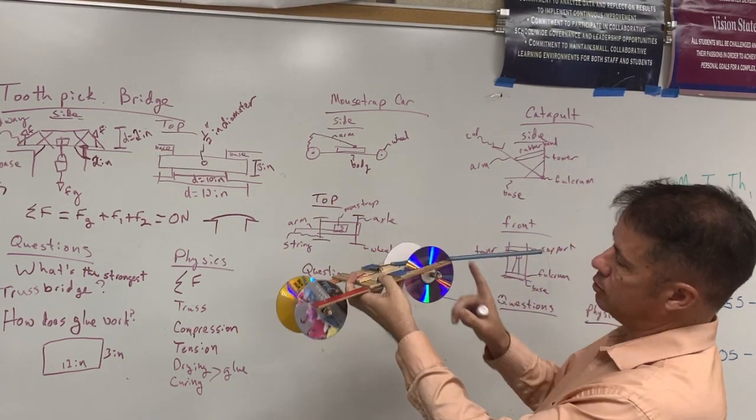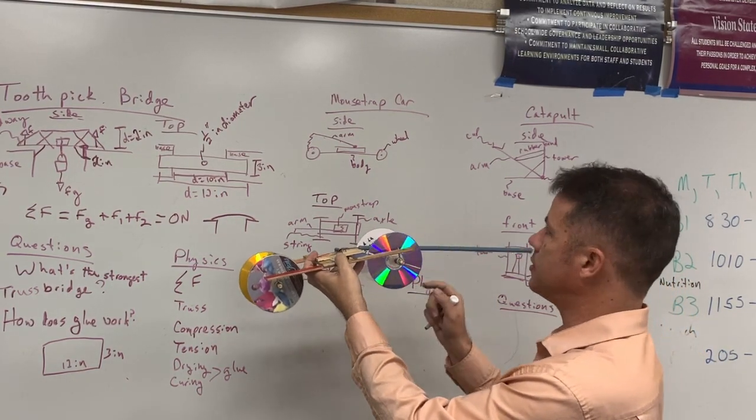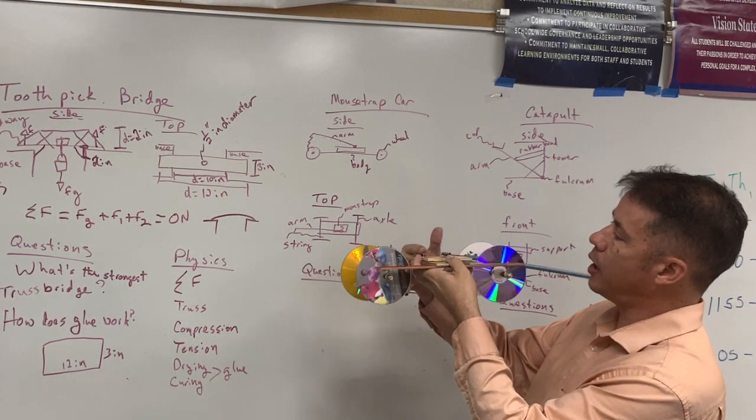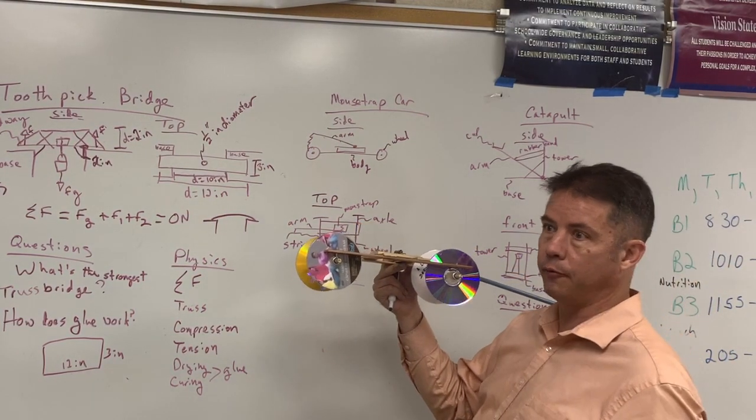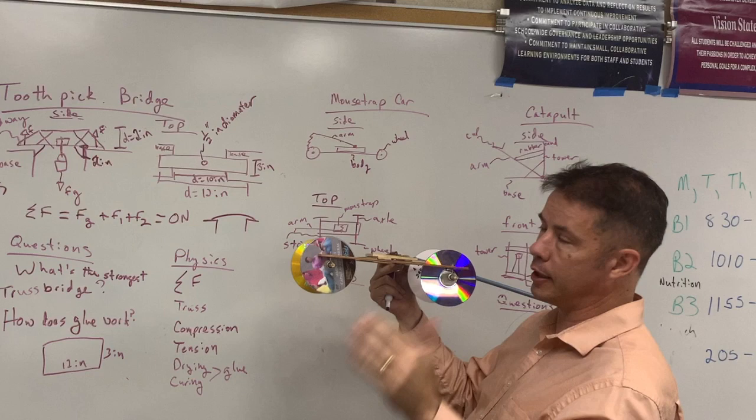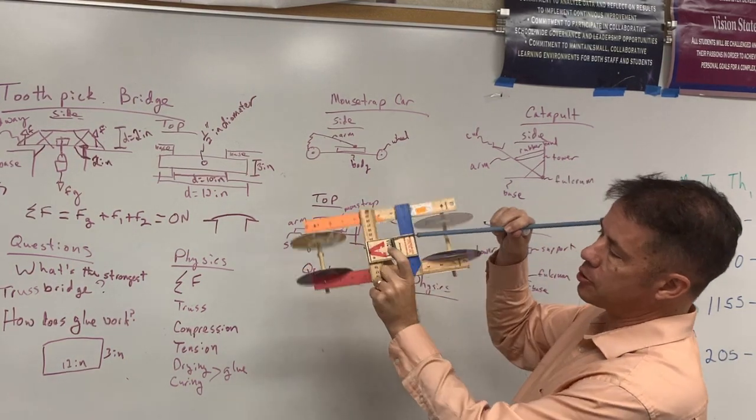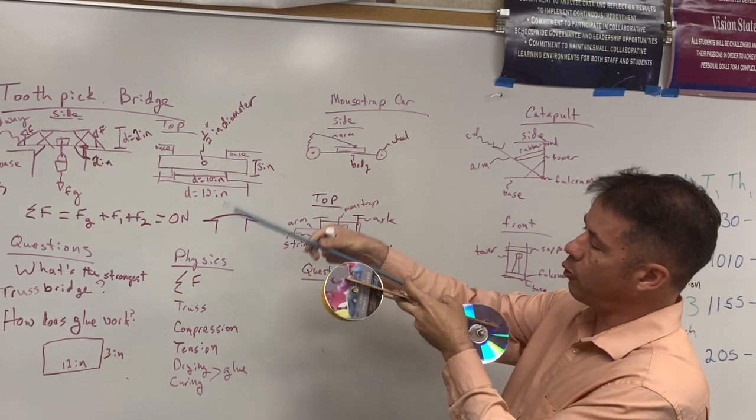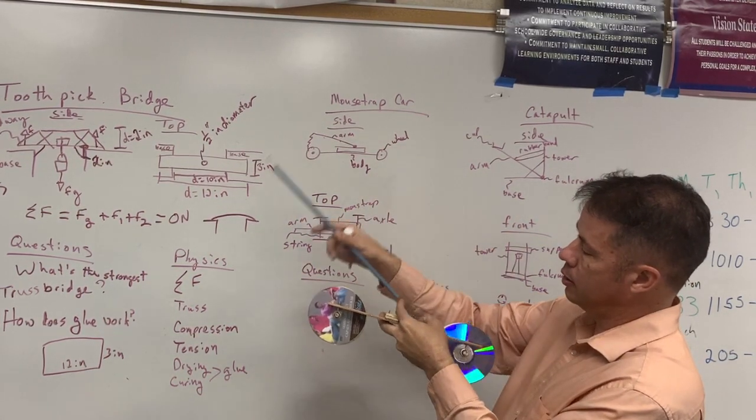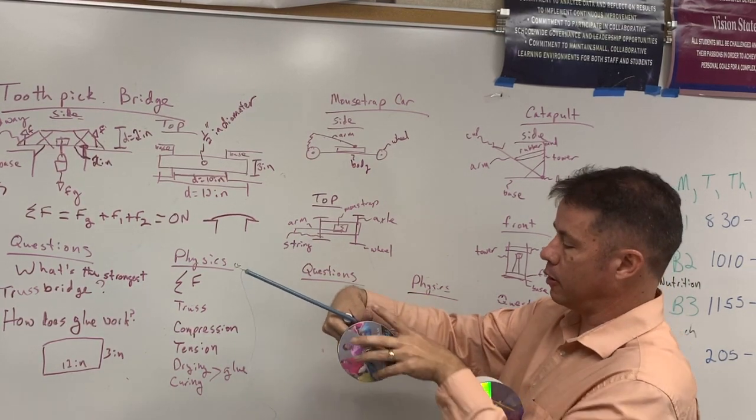So we've got a wheel. And remember, there's no restriction, it doesn't have to be a CD. I've got a body of some kind. This one used rulers, I've had some made out of foam, Legos, all kinds of materials. But you have a body, then you have a mousetrap, has to be a mousetrap, can't be anything else, and then some form of arm. So some form of lever or extension to the arm,